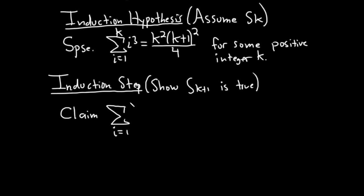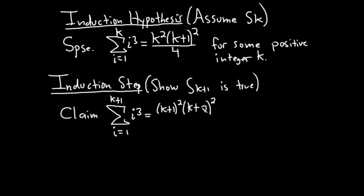If you just write it down without writing 'claim,' people will think you're doing it wrong, because you're trying to show this — you're not supposed to write it unless you indicate in an explanatory way that you're trying to show it. So we claim the sum as i runs from 1 to k plus 1 of i cubed equals k plus 1 squared times k plus 2 squared over 4, replacing all k's with k plus 1 so k plus 1 plus 1 is k plus 2.